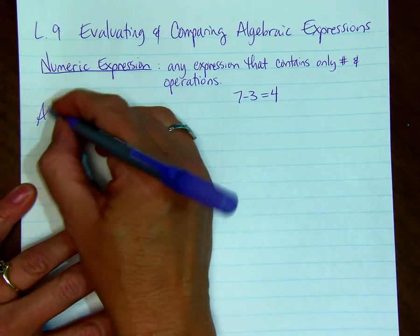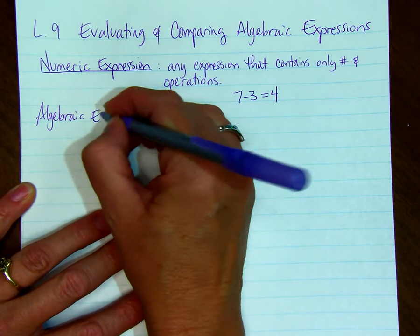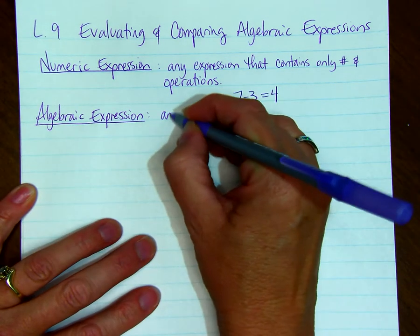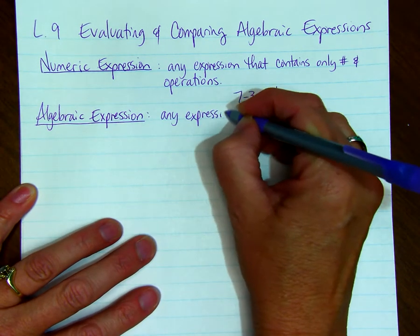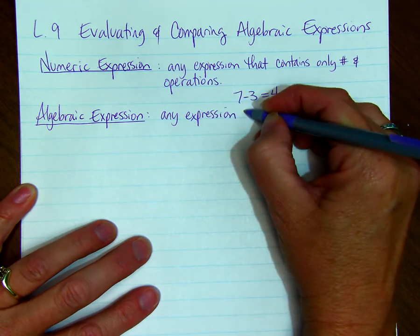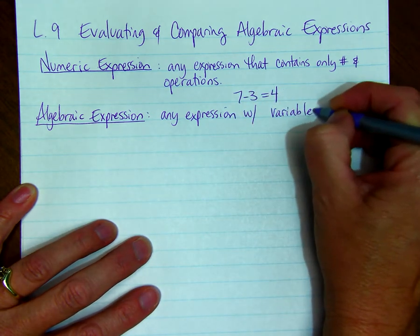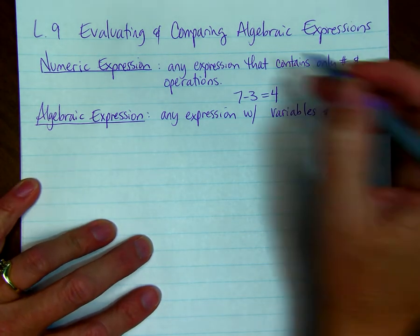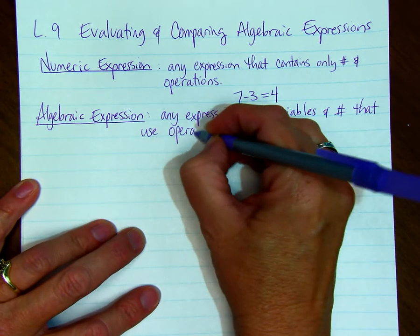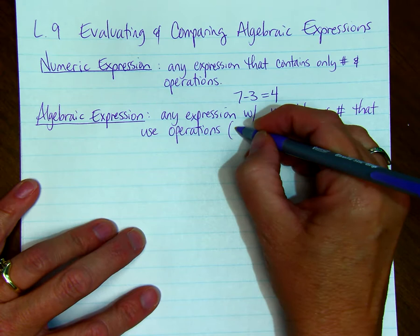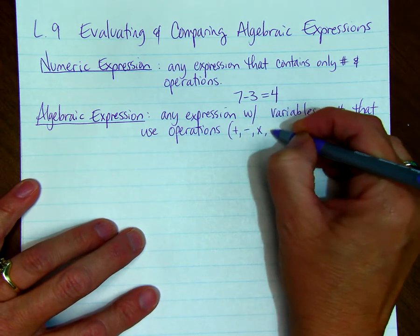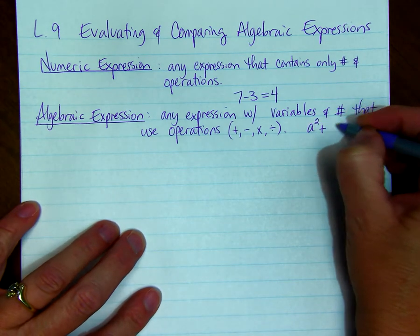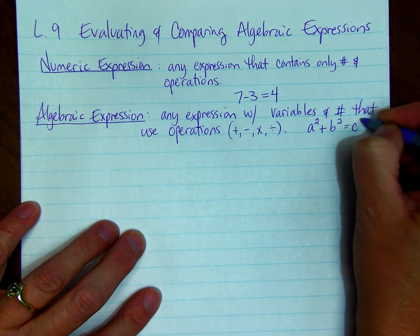Now we have what's called an algebraic expression. In order to be algebraic, the expression must contain variables. So it's any expression with variables and numbers, doesn't have to have numbers, but it has to have variables that uses operations. The operations that we know are adding, subtracting, multiplying, and dividing. Here's an example of an algebraic expression: A squared plus B squared equals C squared.